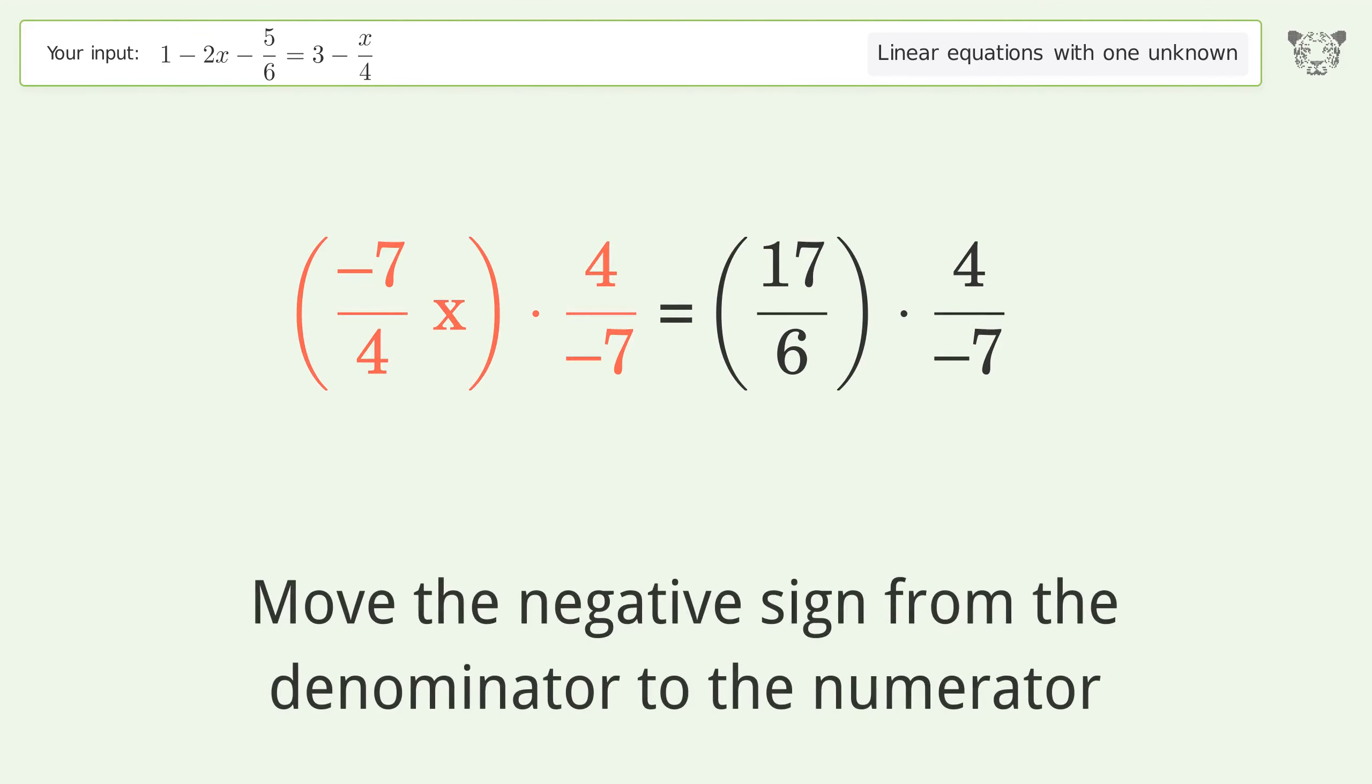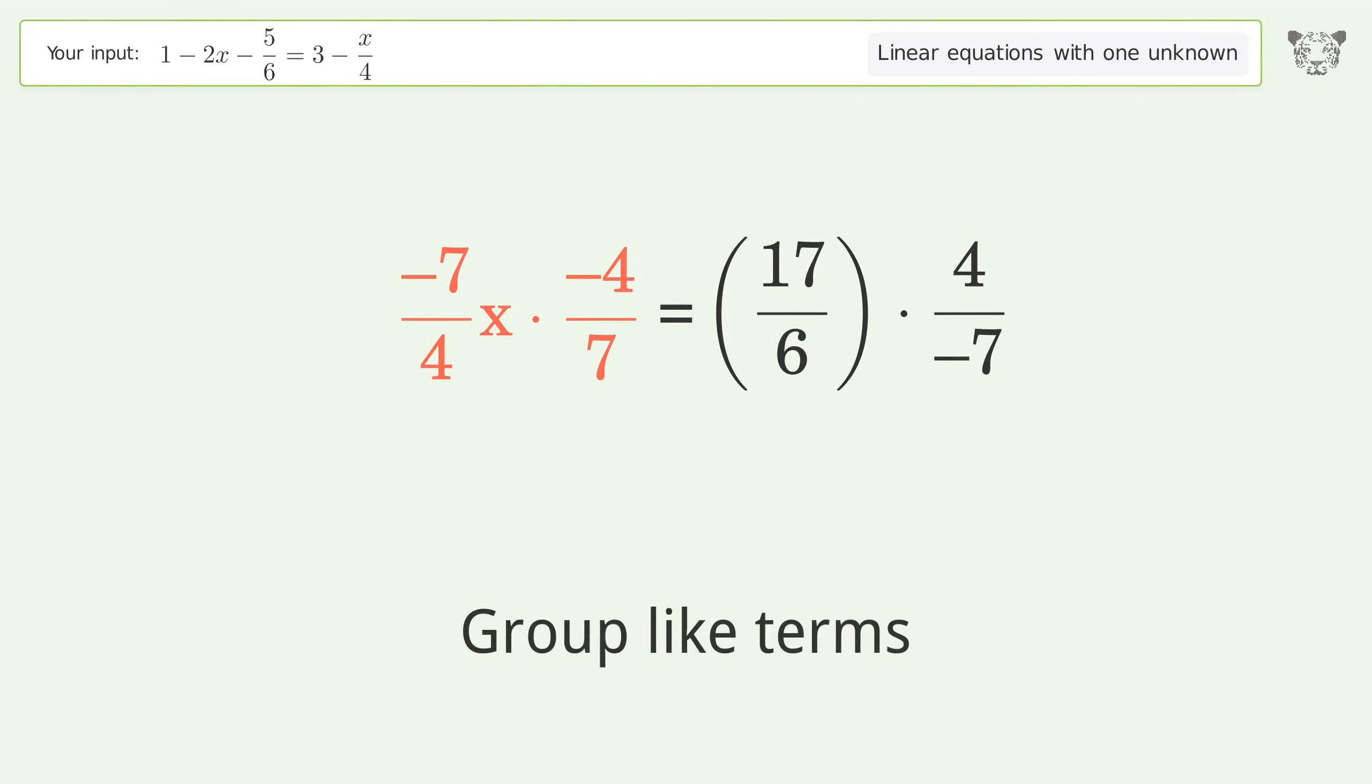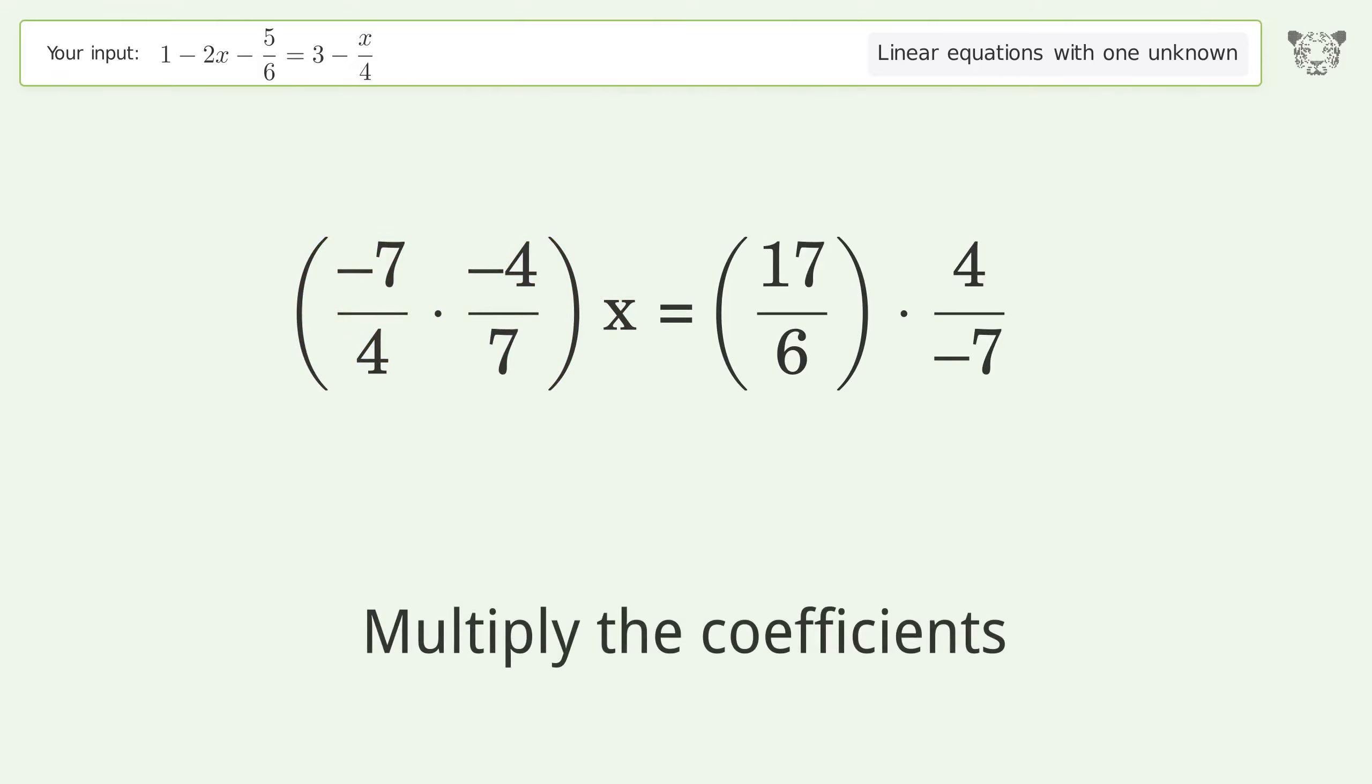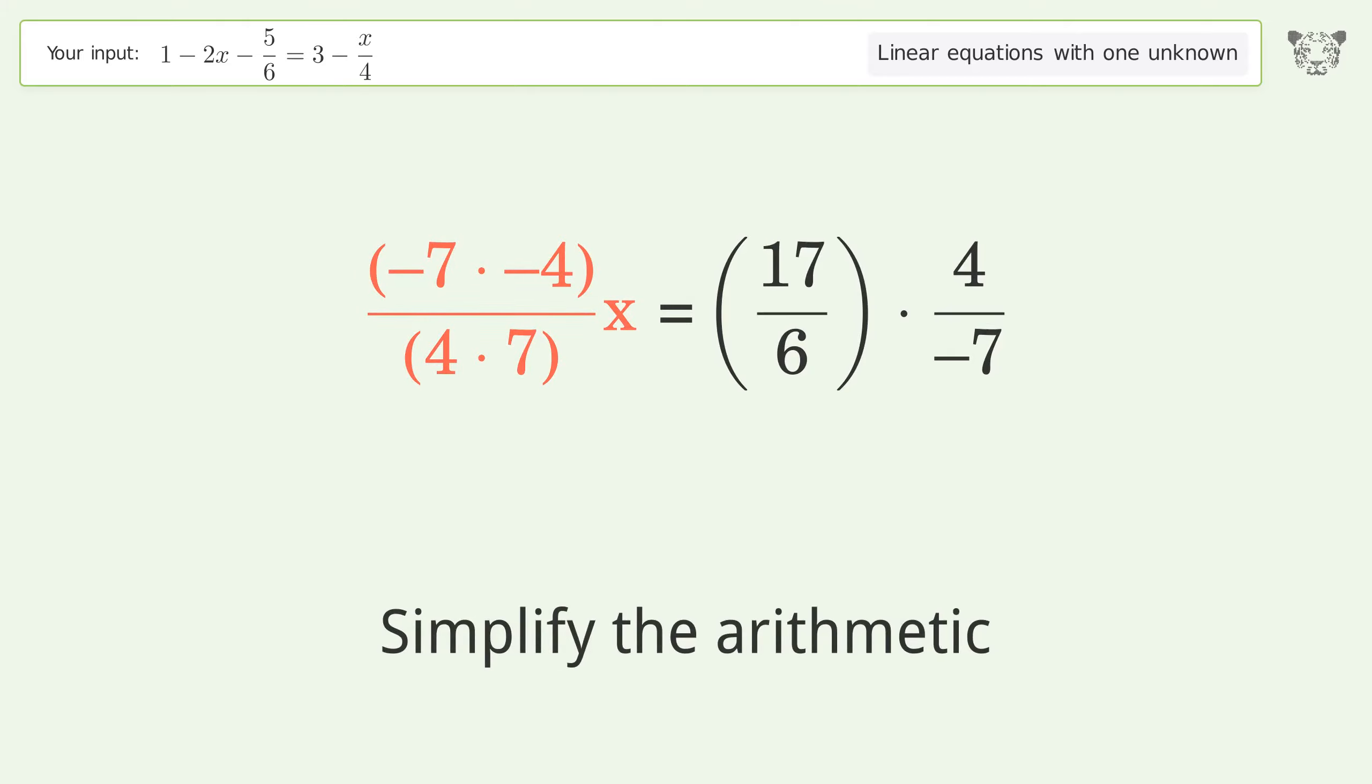Move the negative sign from the denominator to the numerator. Group like terms. Multiply the coefficients. Simplify the arithmetic.